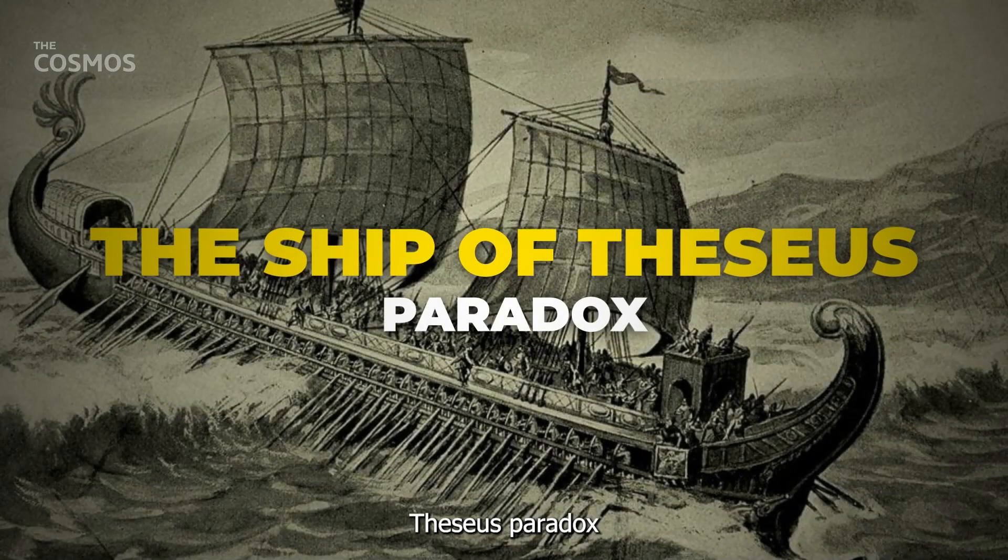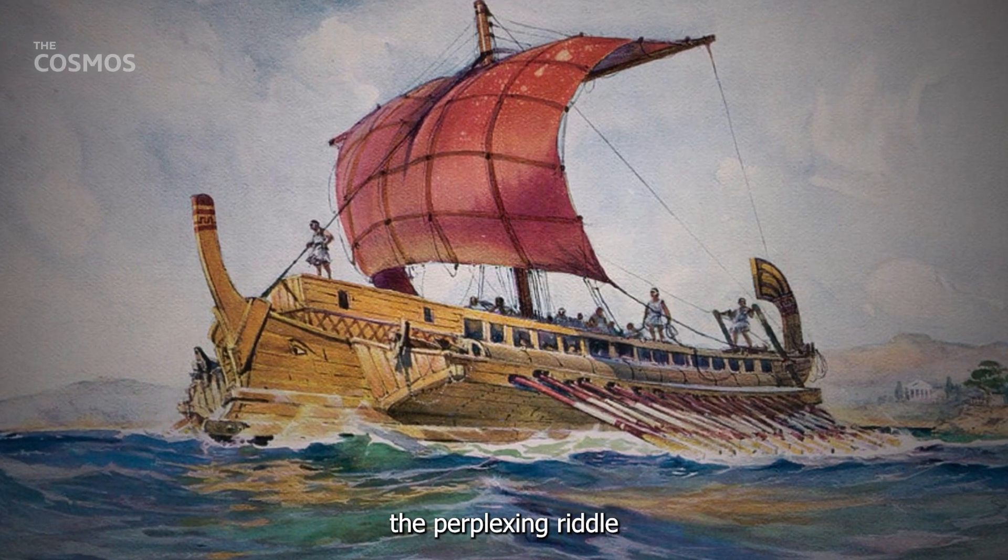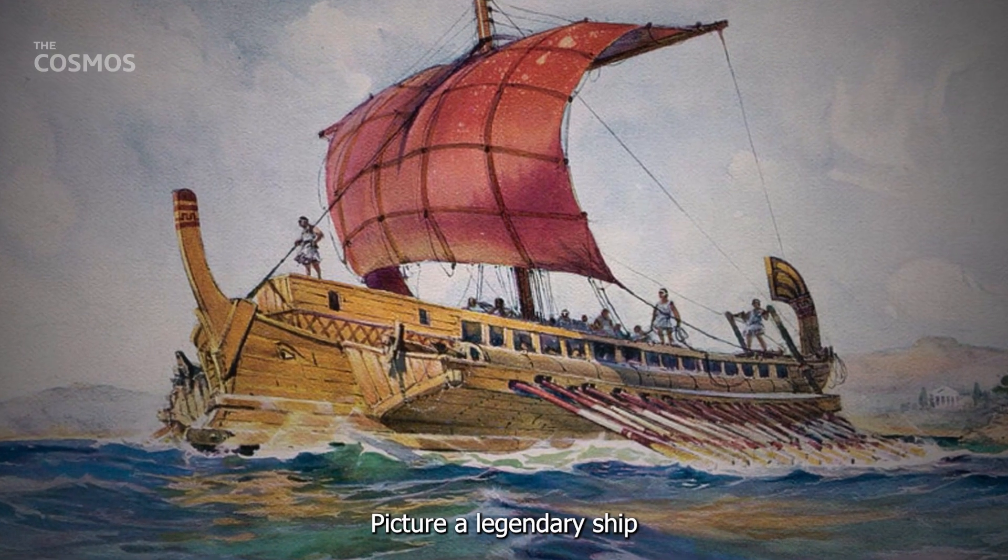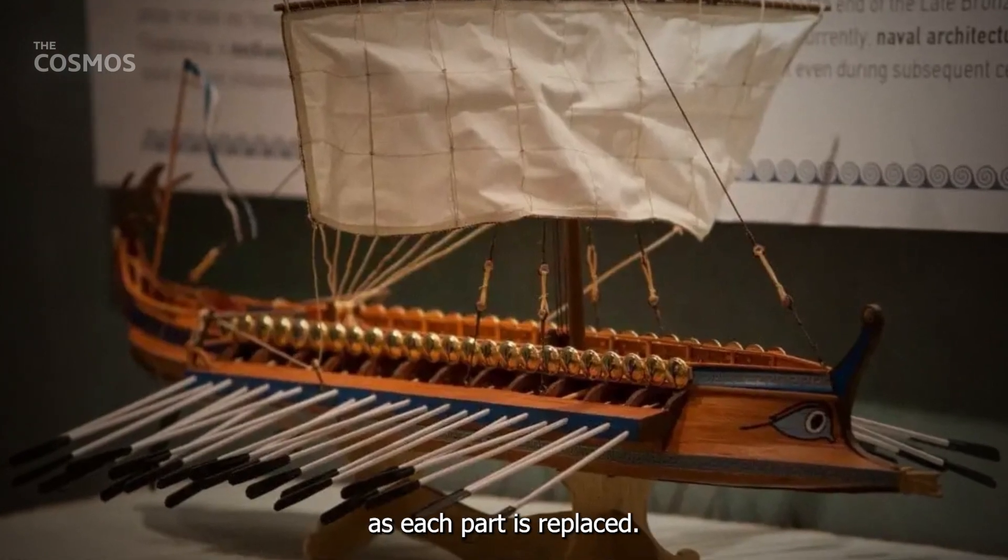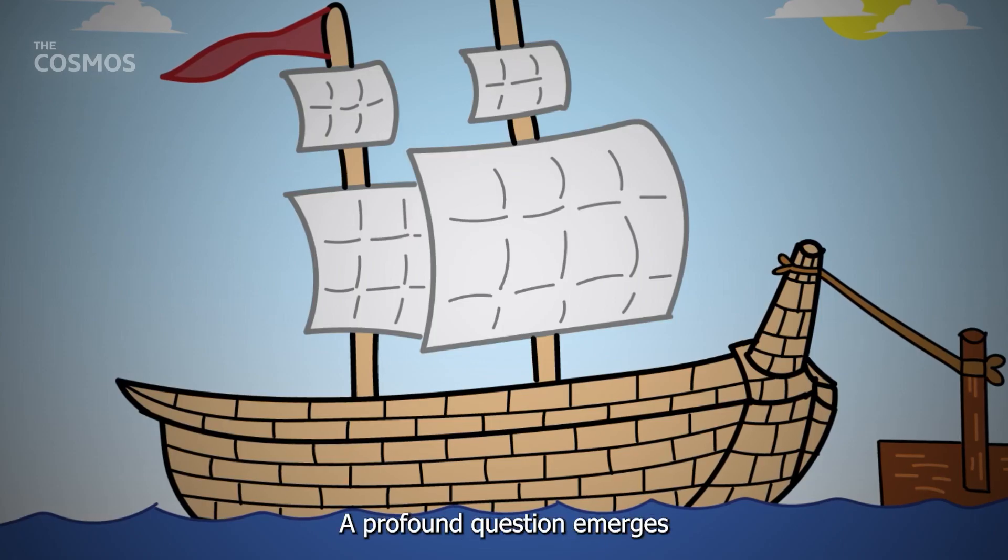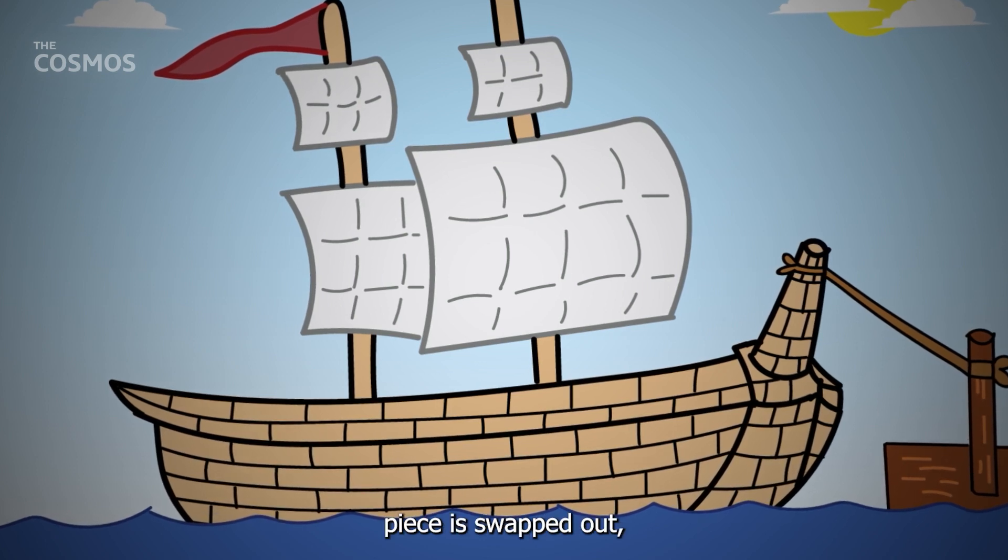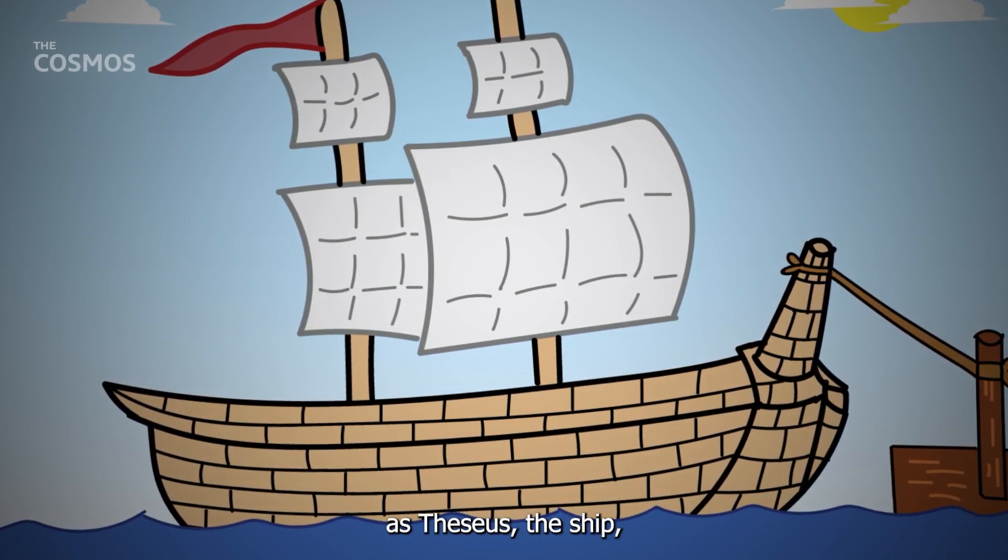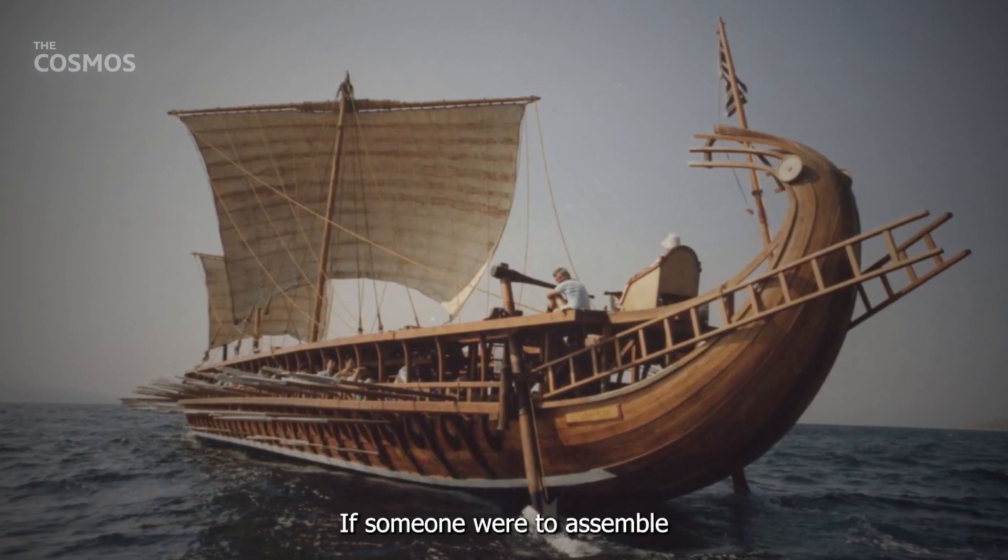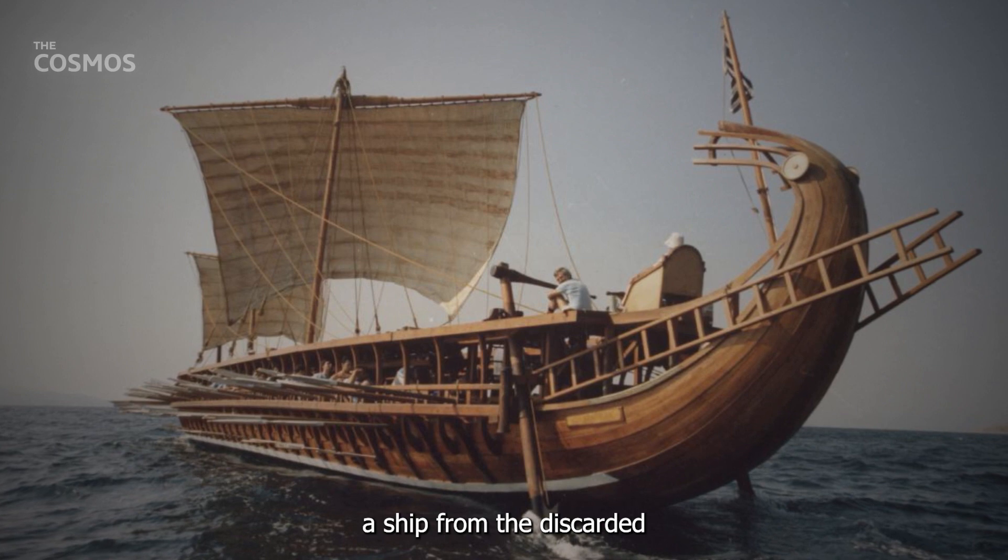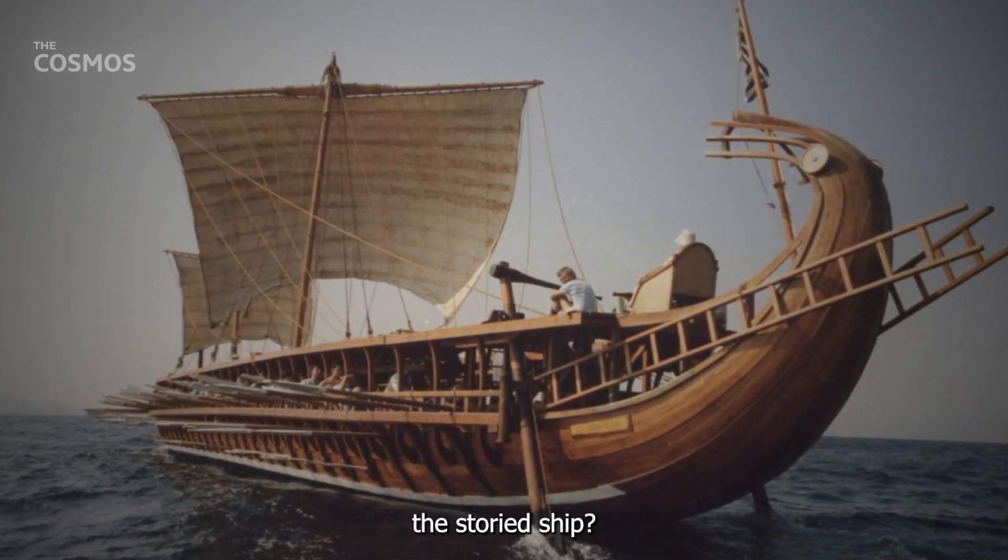The Ship of Theseus Paradox. From the annals of ancient philosophy emerges the perplexing riddle of the Ship of Theseus. Picture a legendary ship, anchored and gradually seeing its wooden components decay. As each part is replaced, a profound question emerges. If every original piece is swapped out, does the vessel still retain its original identity as Theseus's ship? And, adding another layer of complexity, if someone were to assemble a ship from the discarded original parts, which vessel truly carries the essence of Theseus's storied ship?